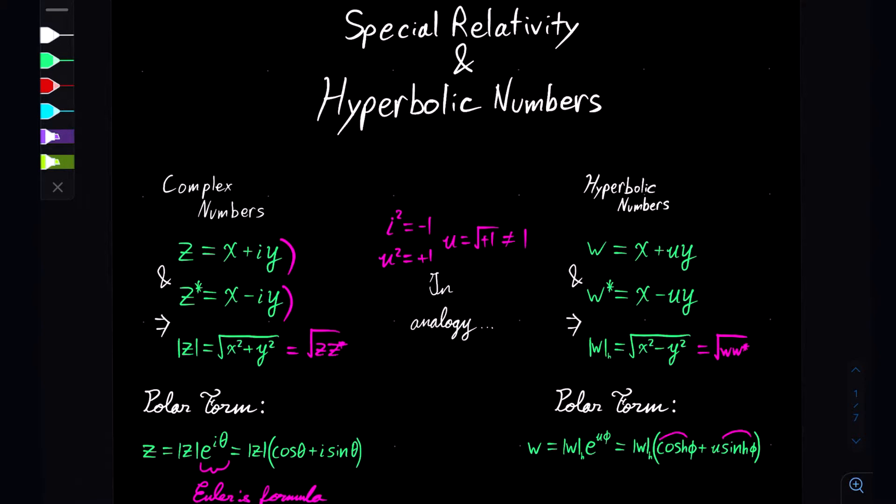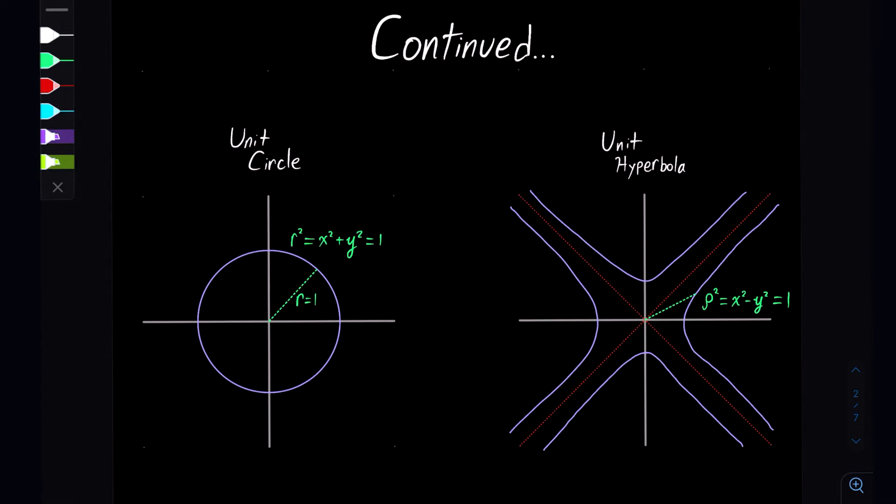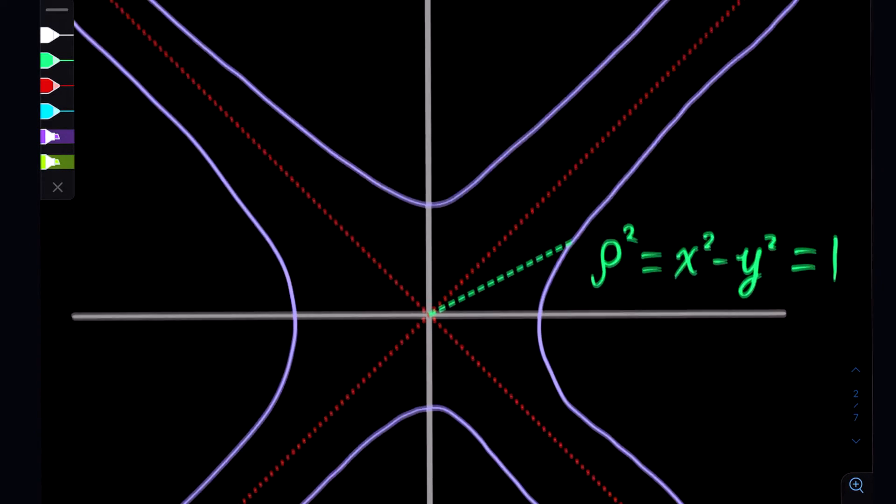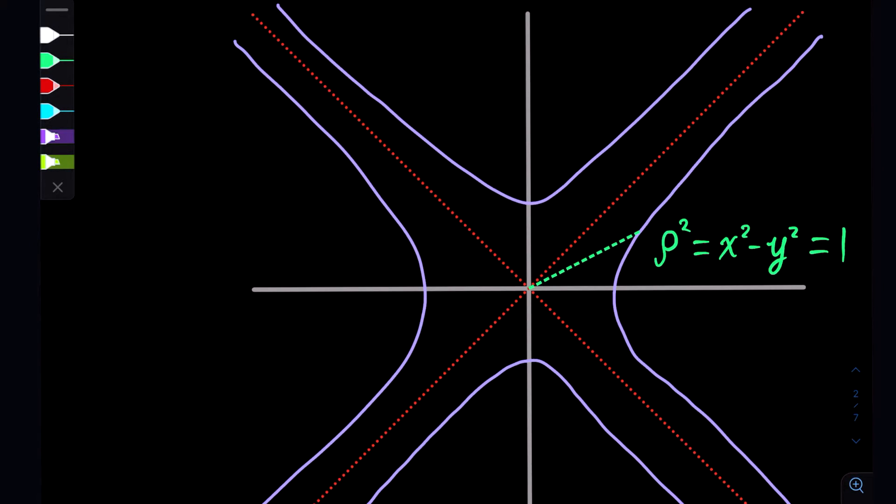Now, to understand them more from a geometric point of view, let us move to the unit circle and unit hyperbola. In the unit circle, we just define this circle which has radius 1 all around it, and it's formed by this equation here. Akin to that, we have the unit hyperbola where you have ρ² = x² - y² = 1, and that is how you define these hyperbolic distances.